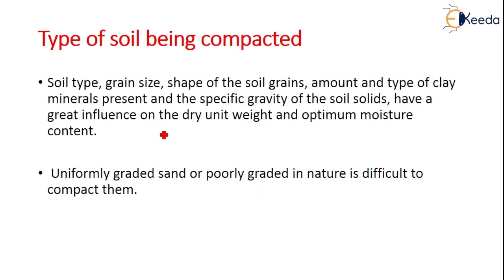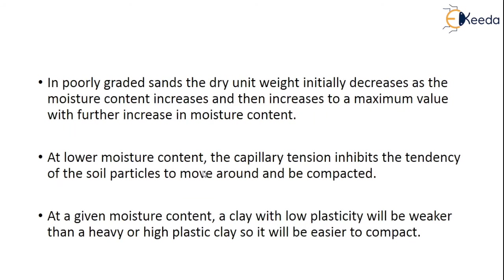Regarding the type of soil compacted: soil type, grain size, shape of the soil grains, amount and type of clay minerals present, and the specific gravity of the soil solids have a very great influence on the dry unit weight and the optimal moisture content. Uniformly graded sand, or poorly graded sand, is very difficult to compact. In poorly graded sands, the unit dry weight initially decreases as moisture content increases, then increases to a maximum value with further increase in moisture content. At low moisture content, capillary tension inhibits the tendency of soil particles to move around when compacted. At a given moisture content, a clay with low plasticity will be weaker than a high plasticity clay, making it easier to compact.